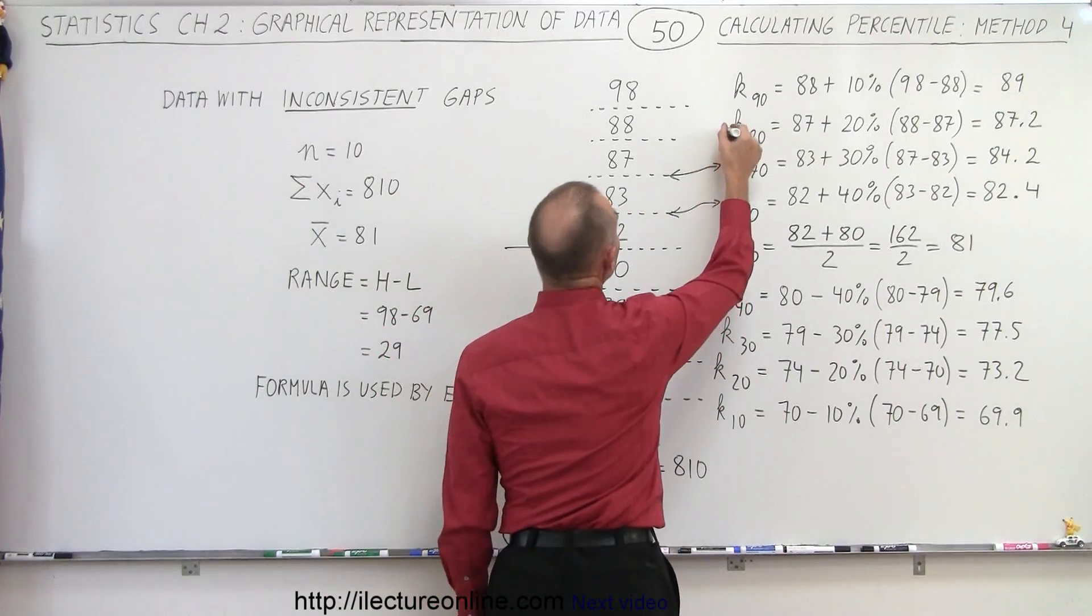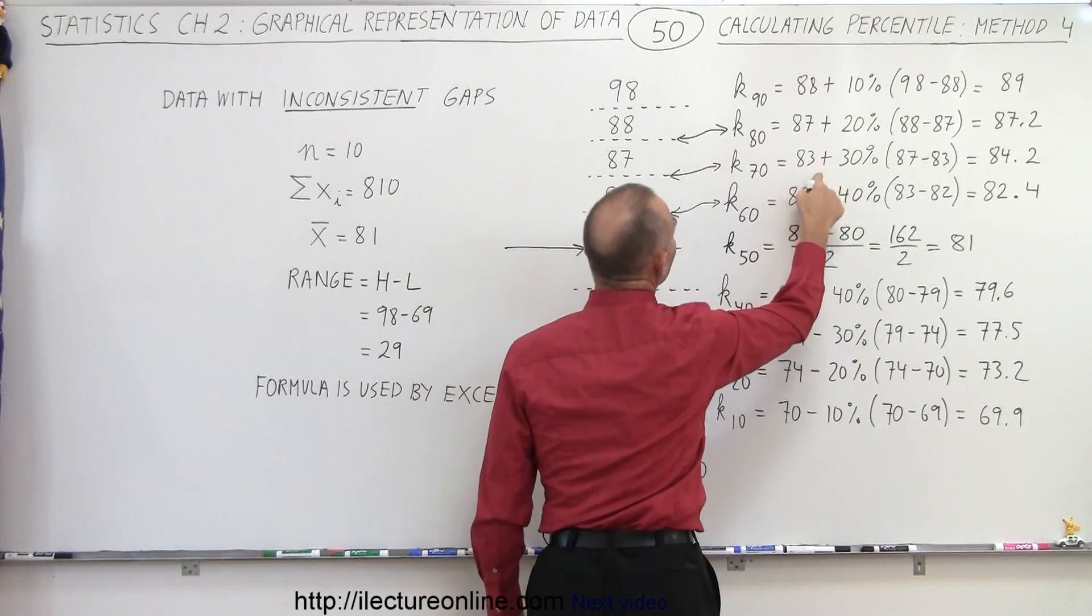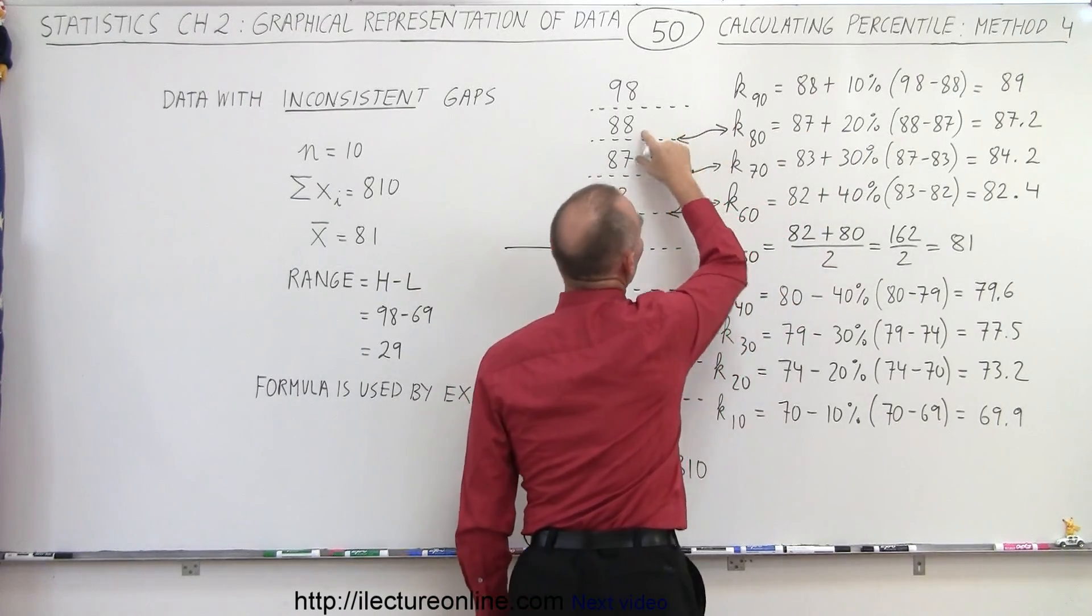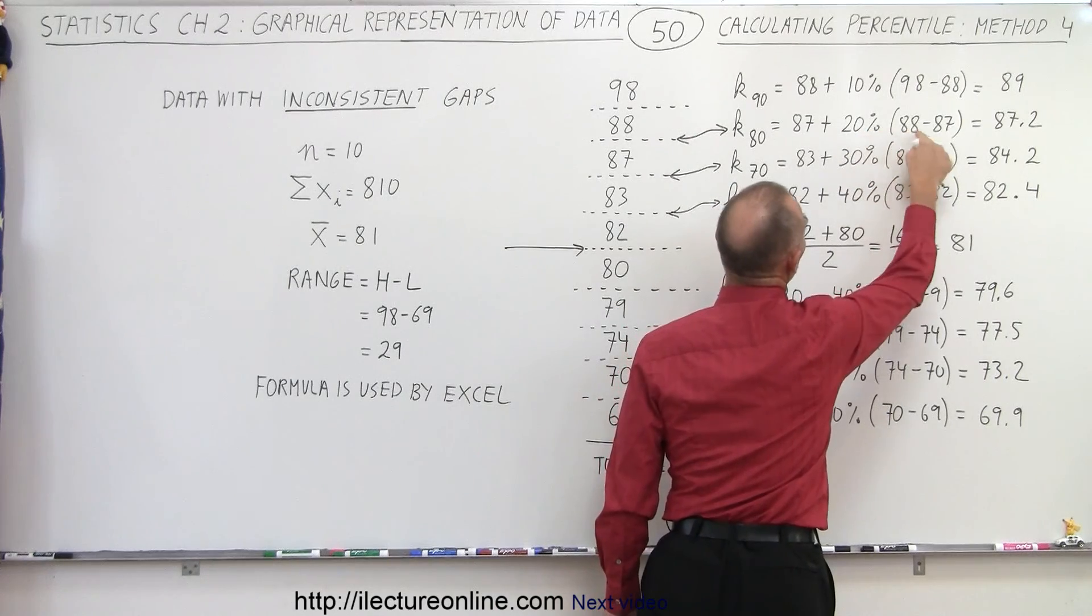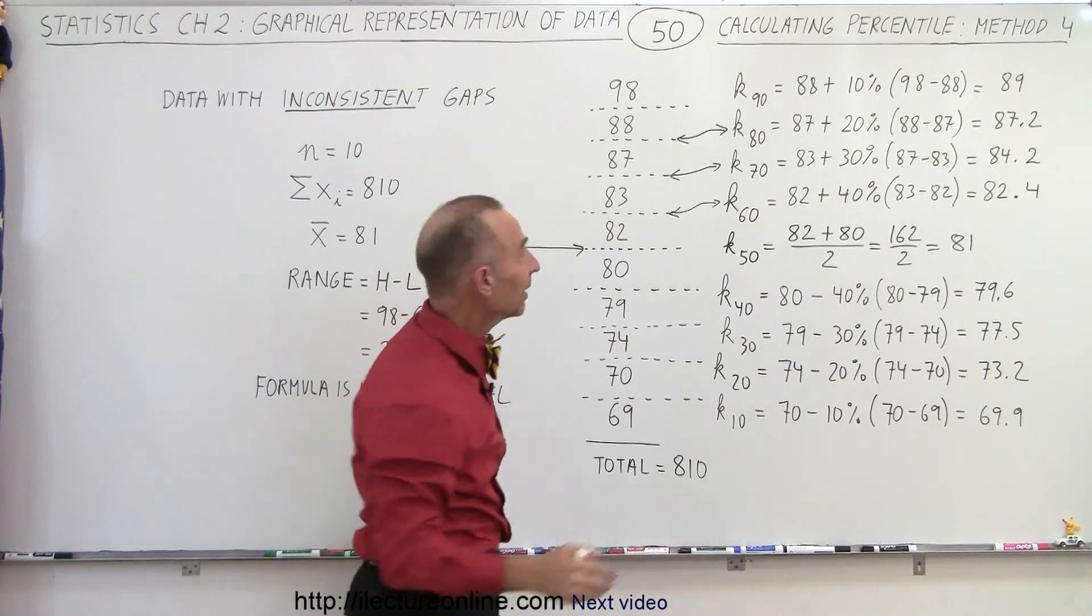Now to get the 80th percentile, notice we take the lower of the two values, 87, and add 20% of the difference. The difference is 1. 20% of 1 is 0.2. 87 plus 0.2 is 87.2.